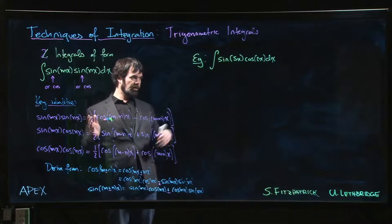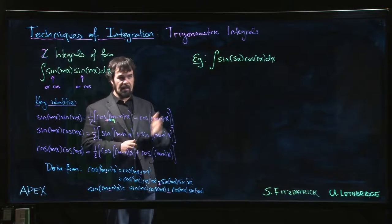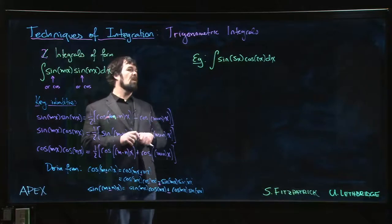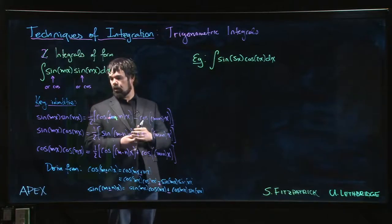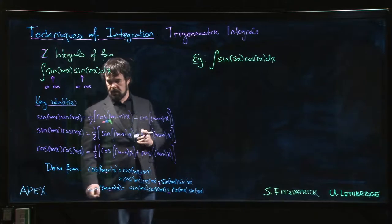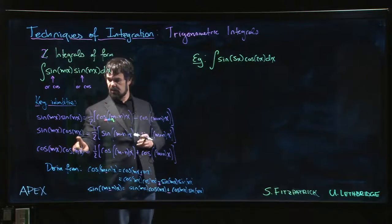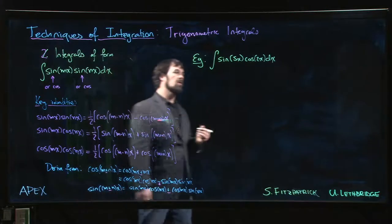Okay, so first of all, direct application of the identities. We'll do this example: we have sine times cosine, we're in the middle here, with m equals 5 and n equals 2.